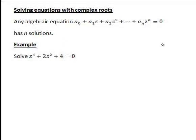Let's have a look at an example of solving an equation that has complex roots. The general theory is that any algebraic equation of the form a₀ + a₁z + a₂z² + ... + aₙzⁿ = 0, where the coefficients could be purely real or complex numbers, has n solutions according to the fundamental theorem of algebra. Today we'll look at an example where the solutions are complex numbers.